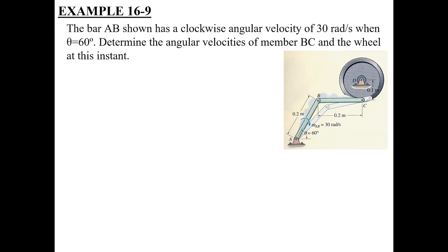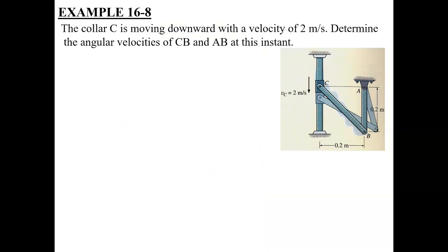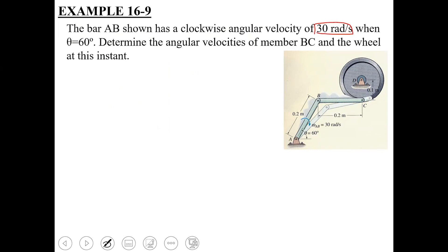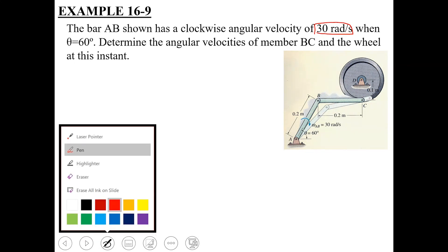Reading the statement of the problem: link AB has a clockwise angular velocity of 30 radians per second. This 30 radians per second is the angular velocity of link AB at the instant when theta equals 60 degrees. We need to determine the angular velocities of the remaining two links — link BC as well as wheel D. We always start from the link for which data is given, so we start from link AB.